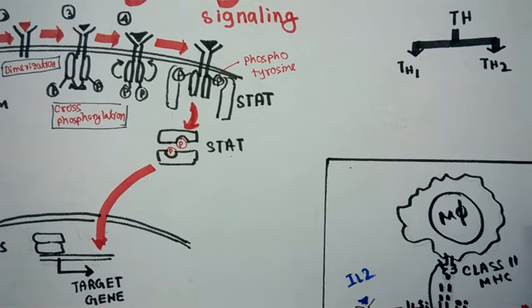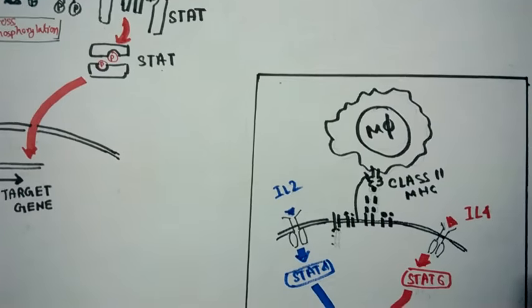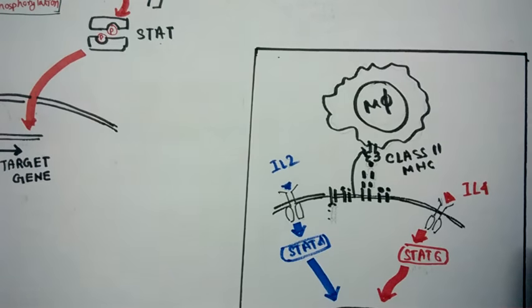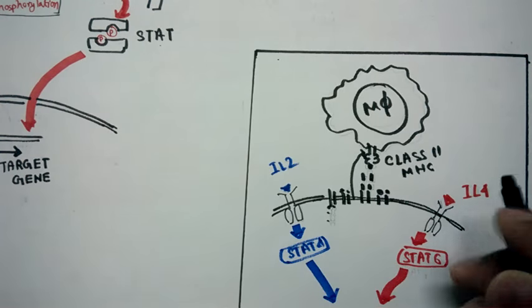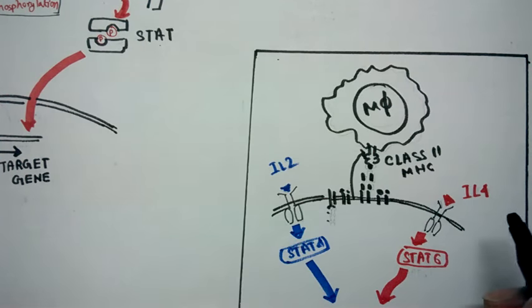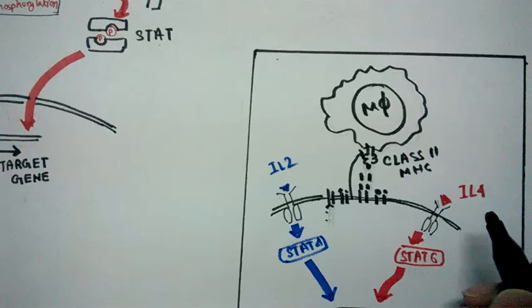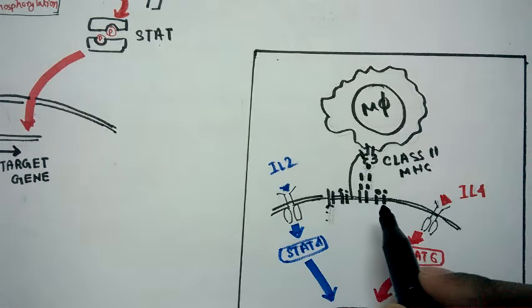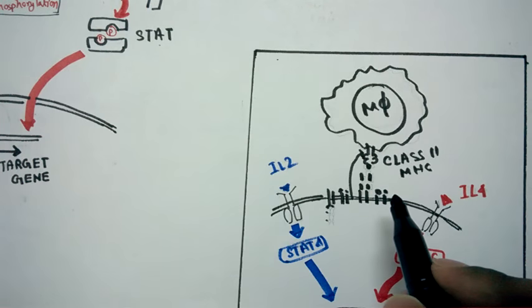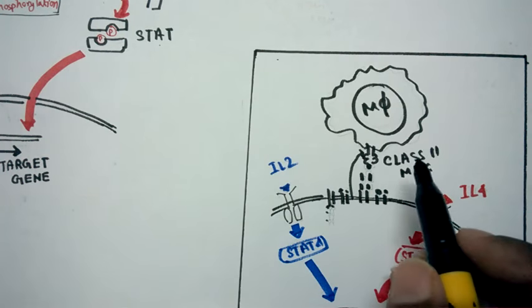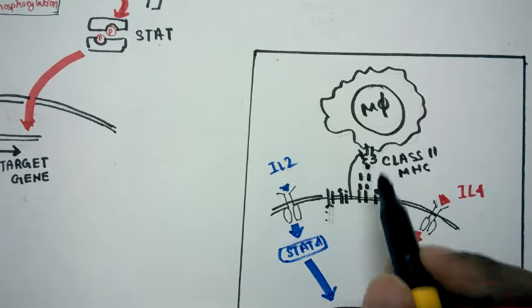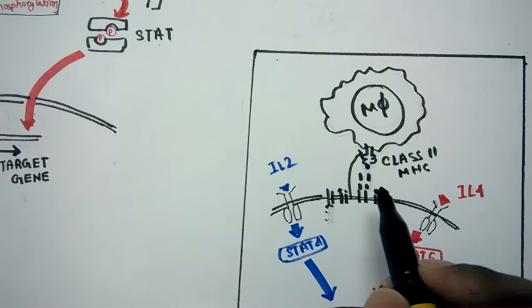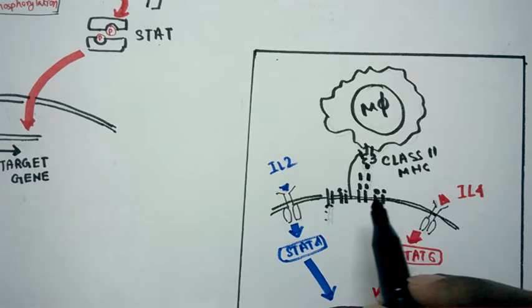So when a macrophage is activating a T helper cell, the macrophage first interacts with the T helper cell by its class 2 MHC, and the T helper cell interacts by its T cell receptor.